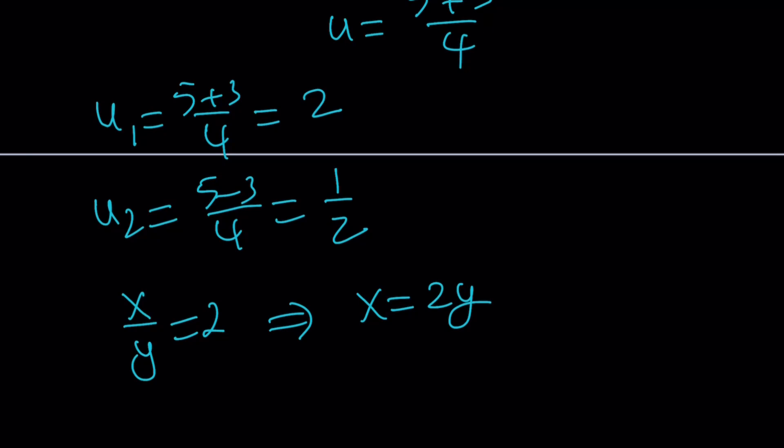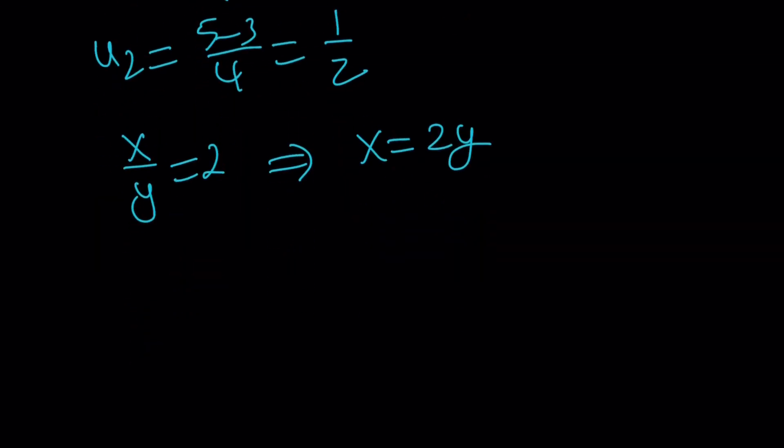Well, we're just going to substitute them. What is u? U is x over y. So, we do know that x over y is equal to 2. That means x is 2y. Now, if you look at one of these equations, it doesn't matter which one. Let's take the first one, shall we? x plus y times x squared minus y squared is 9.